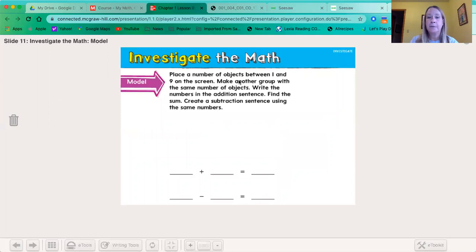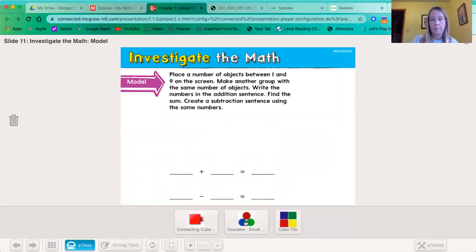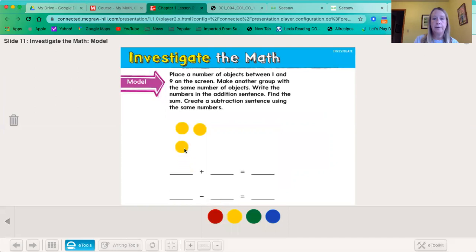Place a number of objects between one and nine on the screen. One, two, three, four. Make another group with the same number of objects. One, two, three, four.